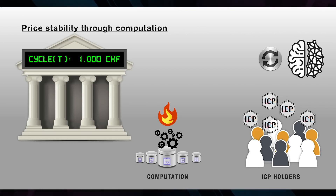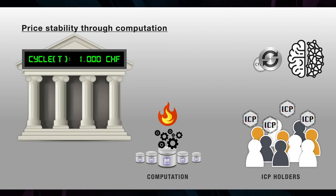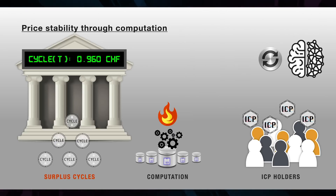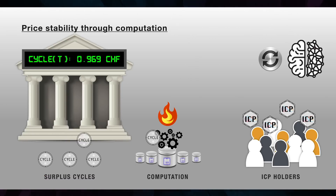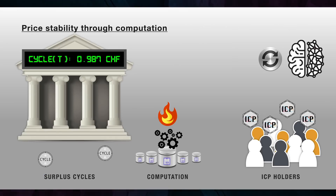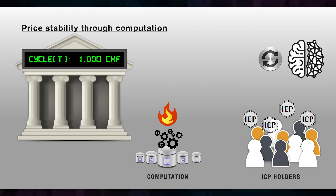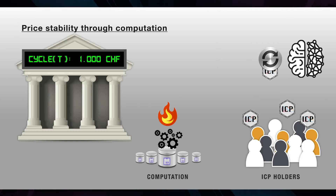The value of Cycles stays stable for two reasons. Firstly, the Network Nervous System creates a firm ceiling on their price because it will always create one trillion Cycles in exchange for approximately one Swiss franc's worth of ICP. Secondly, if there is ever a surplus of Cycles on financial exchanges and the price there falls, users will purchase those cheaper surplus Cycles for use as fuel, leading to them all eventually being burned by computation, such that future Cycles will have to be created by converting ICP, which returns the price to its usual ceiling.